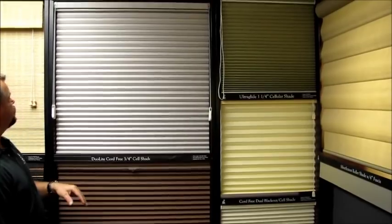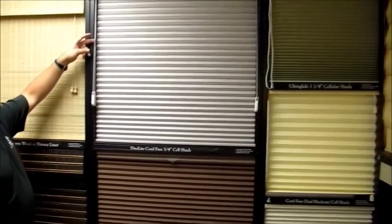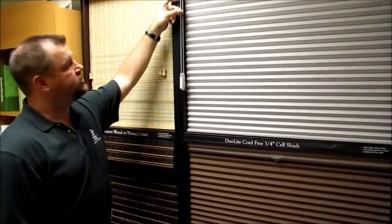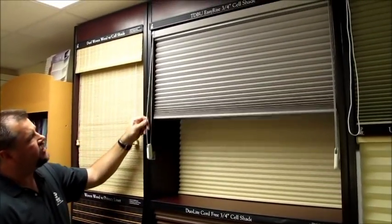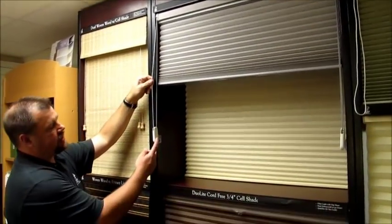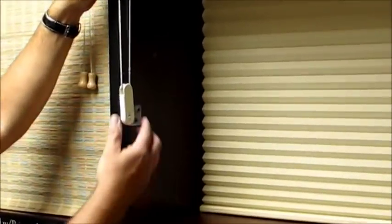Next thing I'd like to talk about is the control options. First, you have here is a continuous cord. What this does is this is a loop that goes up and down with this. This particular model has a child safety cord tensioner. It's spring-loaded. It keeps the cord close to the wall and reduces the chance of anything getting its head caught inside here.